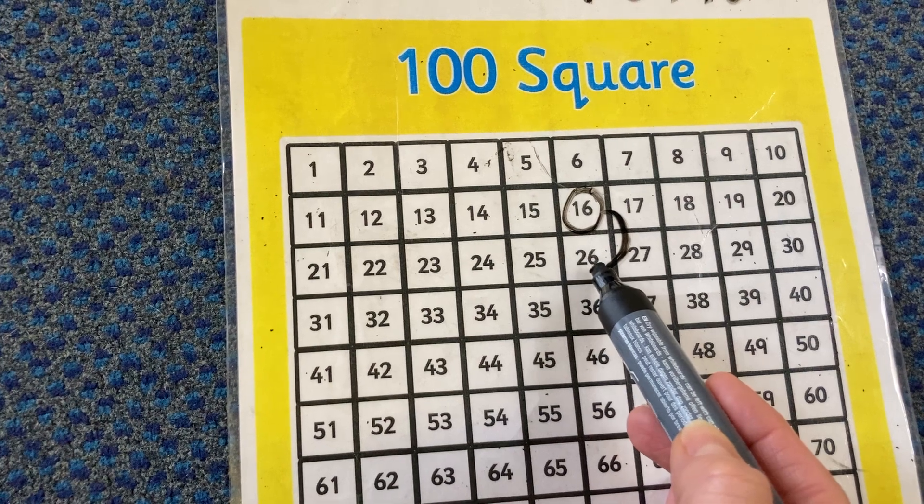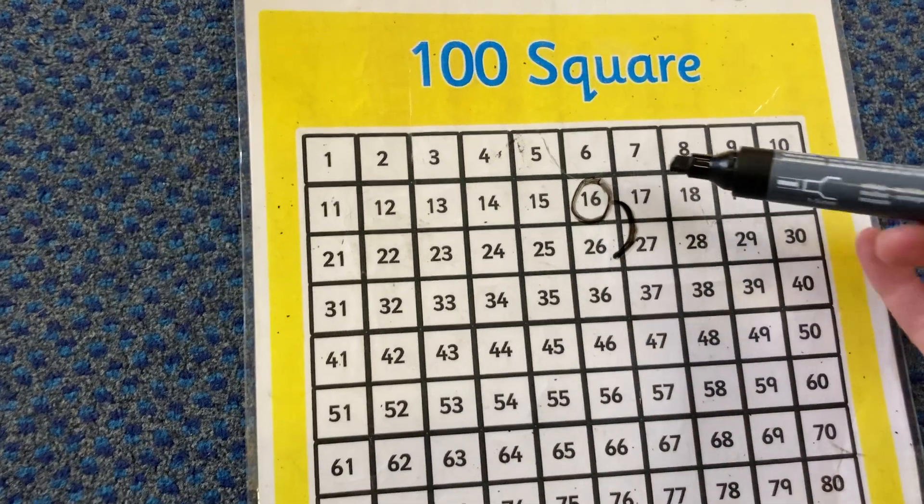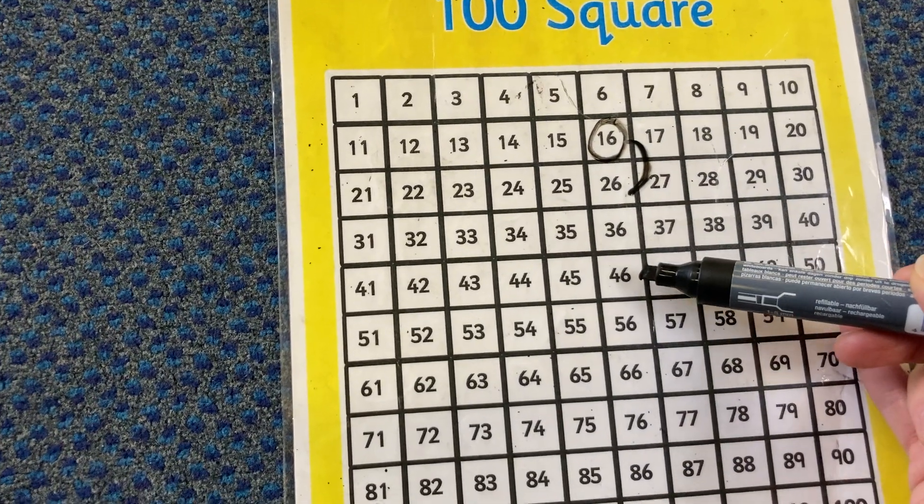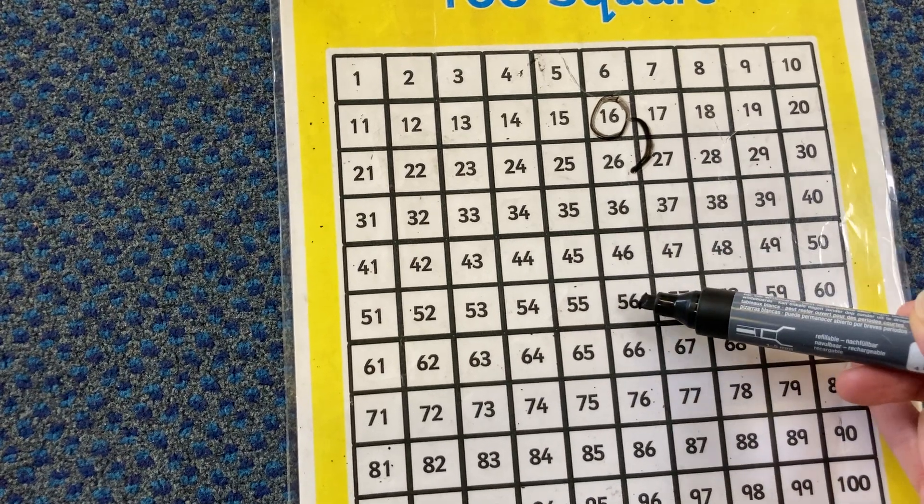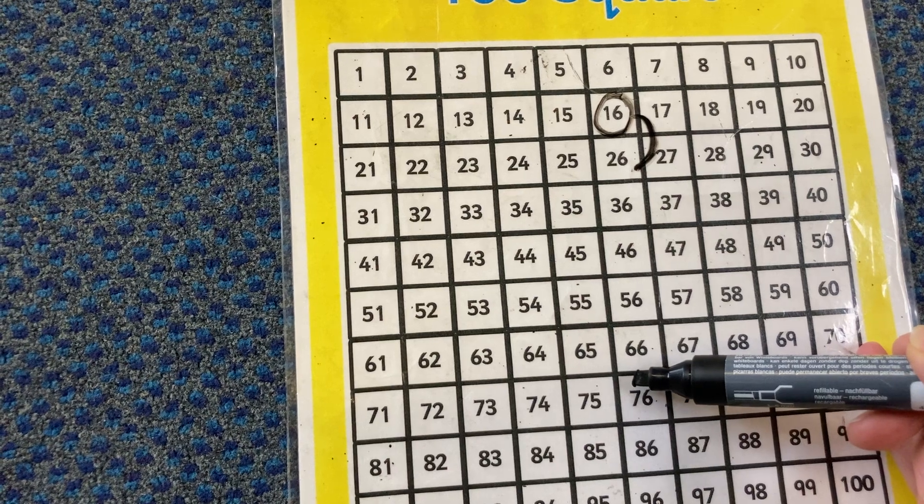So that's something to think about when you're adding tens into your numbers. And if we go down that number square in that column there, you can see each time if we add 10, add 10, add 10, the ones stays the same and it's the tens number that is changing.